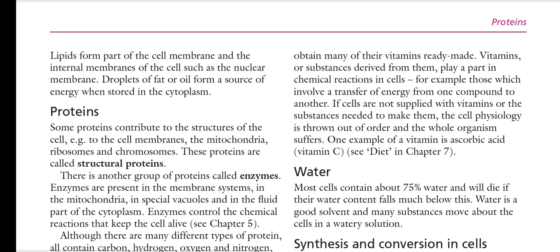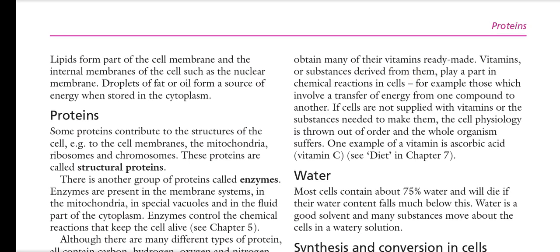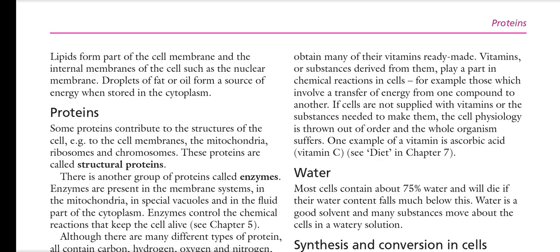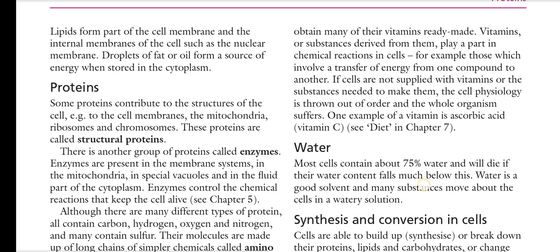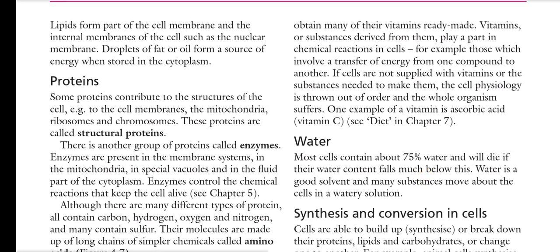Our body can also synthesize vitamin D, especially in three organs: the liver, and the skin. Vitamins or substances derived from them play a part in chemical reactions in the cell, such as those involving the transfer of energy from one compound to another. If cells are not supplied with vitamins, the cell physiology is disrupted and the whole organism suffers. Examples of vitamins include vitamin C (ascorbic acid), and B vitamins such as B3, B5, B8, B9, and B12.